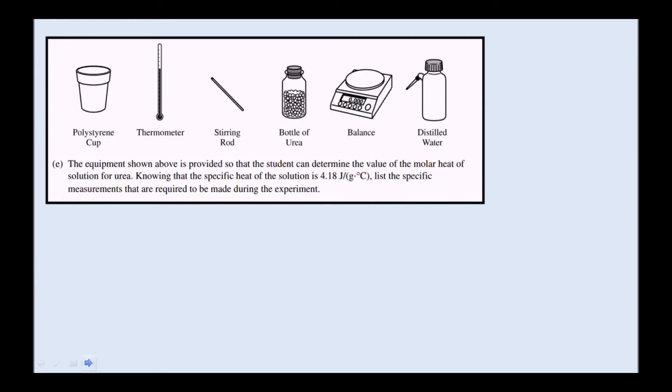The equipment shown above is provided so that the student can determine the value of the molar heat of solution for urea. Knowing that the specific heat of the solution is 4.18 joules per gram Celsius, list the specific measurements that are required to be made during the experiment. What they're talking about here, in terms of getting the molar heat of solution for urea, is that we would be adding urea to water and measuring the temperature change.